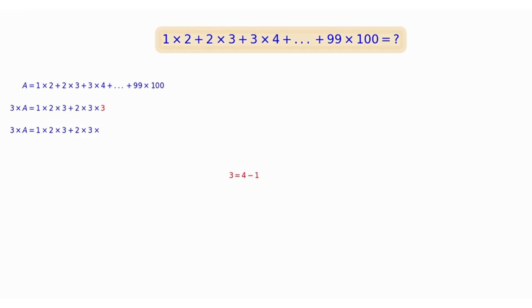Indeed, if one skips the first product and pays attention to the last factor 3 of the second product, one can easily express 3 as the subtraction of 4 and 1. We replace this factor 3 by 4 minus 1 in the product.